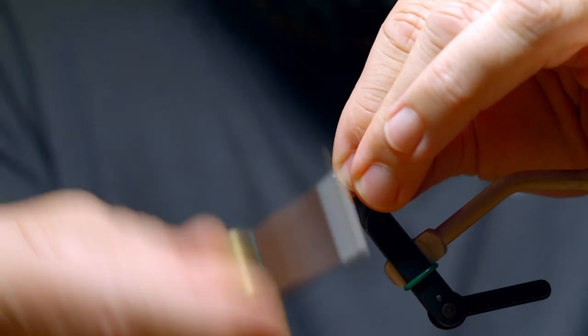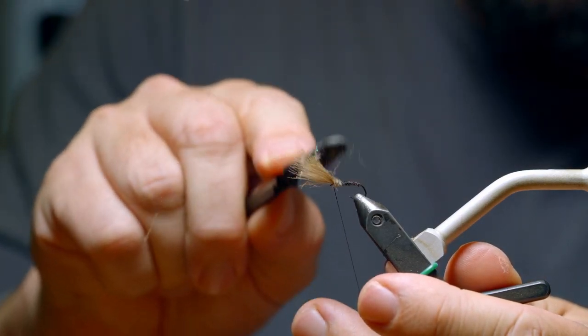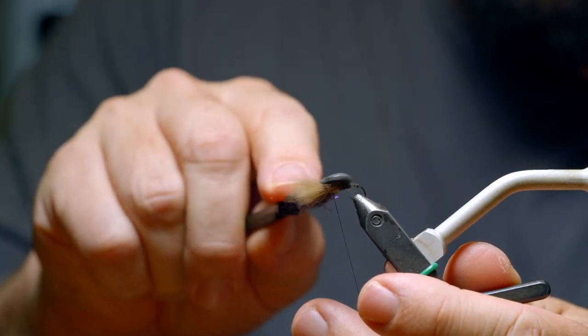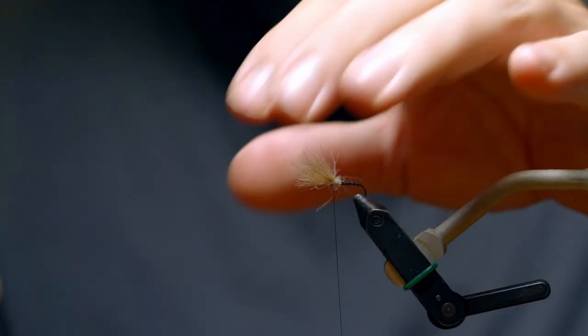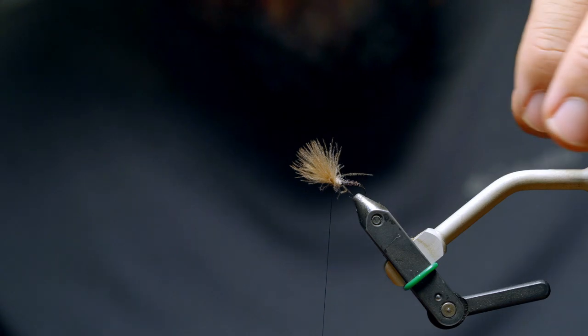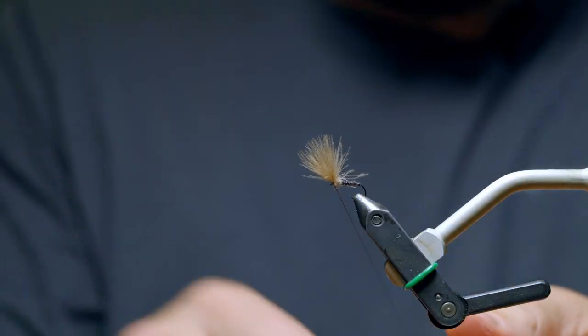A couple wraps in the front. We're going to have a little brush here. Brush it out. If you want to give those legs out a bit. I don't think the legs make all the difference in the world. But, it does make it look really nice. You can see you get this nice, leggy, buggy fly.